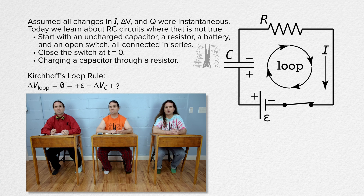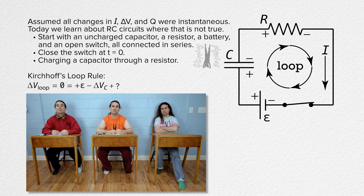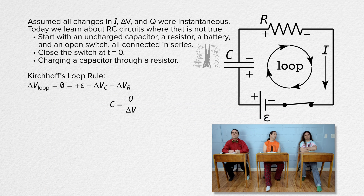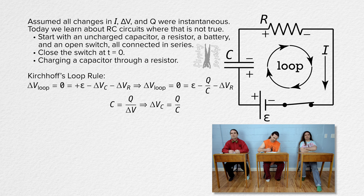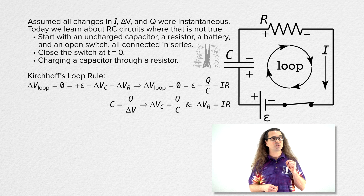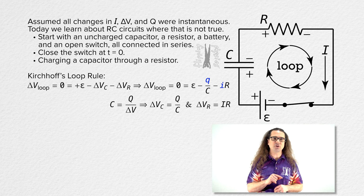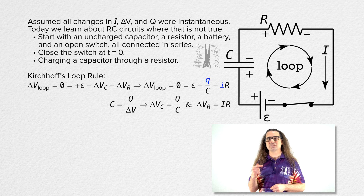Next is the resistor. In a previous lesson, we determined that electric potential goes down when moving in the direction of the current across a resistor, so we subtract the electric potential difference across the resistor. We know capacitance equals charge over electric potential difference, so the electric potential difference across the capacitor equals charge over capacitance. And Ohm's law states that the electric potential difference across the resistor equals the current through the resistor times the resistance. We use lowercase q for charge and lowercase i for current because both are changing as functions of time in this Kirchhoff's loop rule equation.